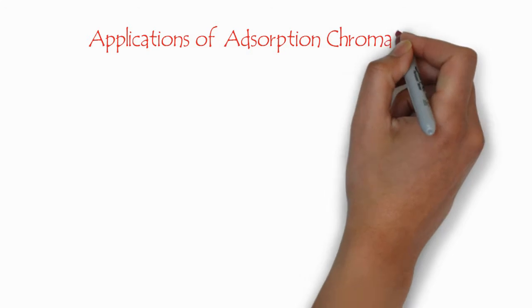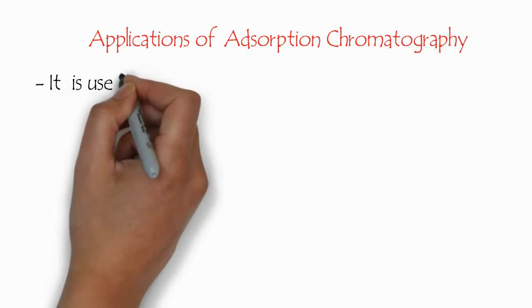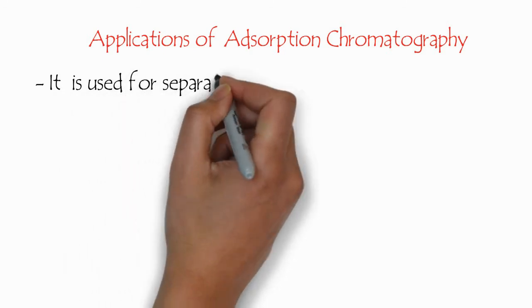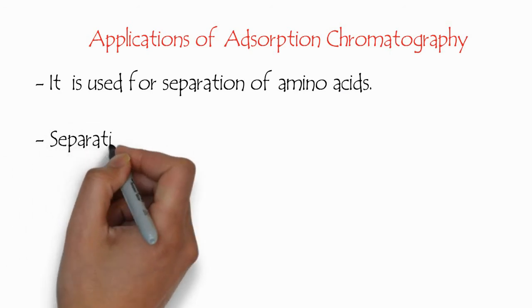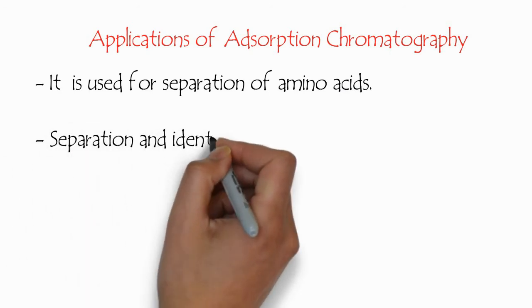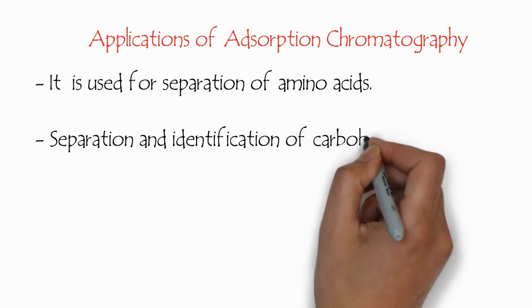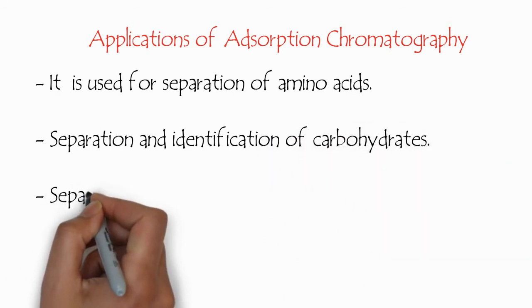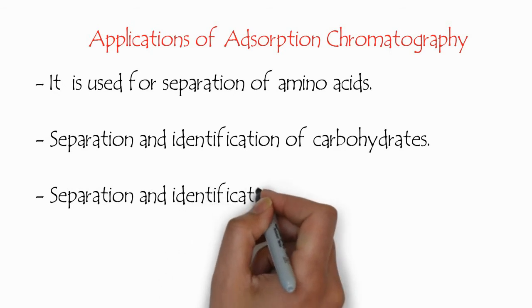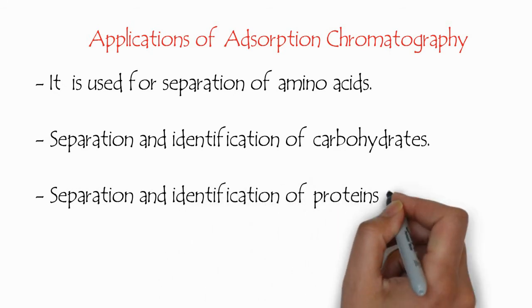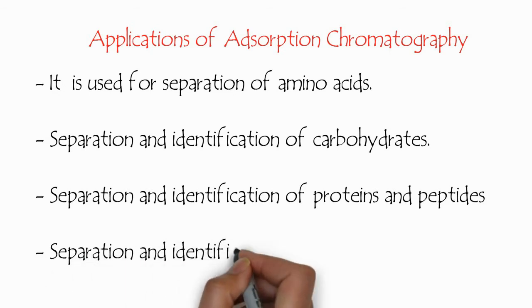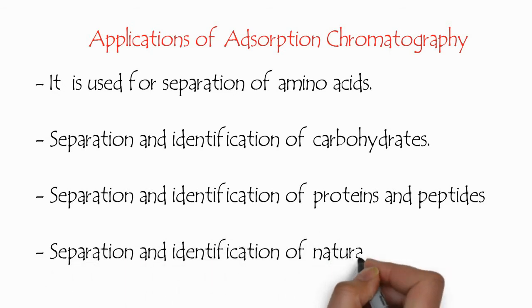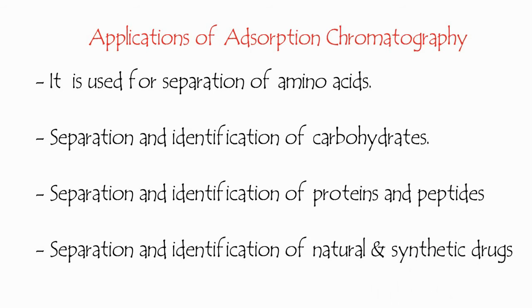Applications of adsorption chromatography: This chromatography is widely used. It is used for the separation of amino acids, and also for the separation and identification of carbohydrates in unknown samples. It is also used for the separation of proteins and peptides, as well as the separation and identification of natural and synthetic drugs.